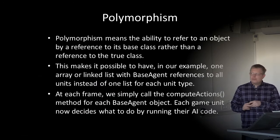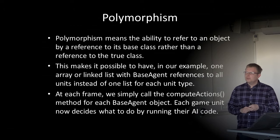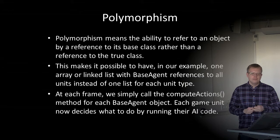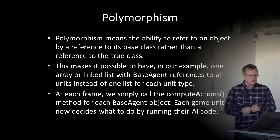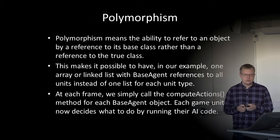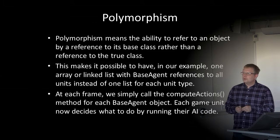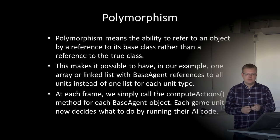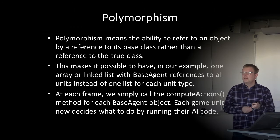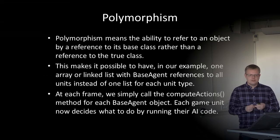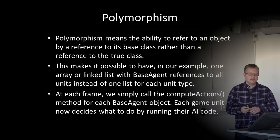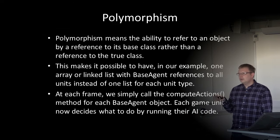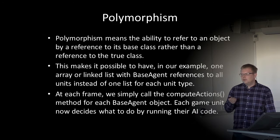Polymorphism means the ability to refer to an object by a reference to its base class rather than to its true class. In the StarCraft bot example, it makes it possible to have one array or linked list of base agent references to all units instead of one list per unit type. At each frame we can simply call the compute actions method for each base agent, and it executes the logic for each game unit so they decide what to do by running their AI code.